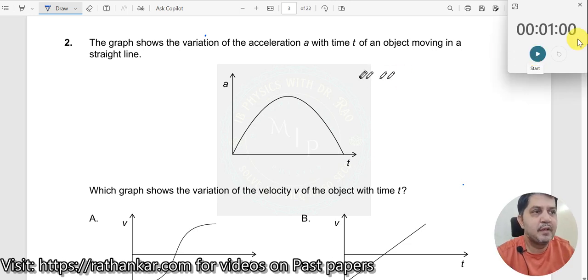Question number 2: The graph shows the variation of acceleration a with time t of an object moving in a straight line. This is an a-t graph shown. Which graph shows the variation of the velocity v of the object with time? So we need to know the corresponding v-t graph with respect to this a-t graph.